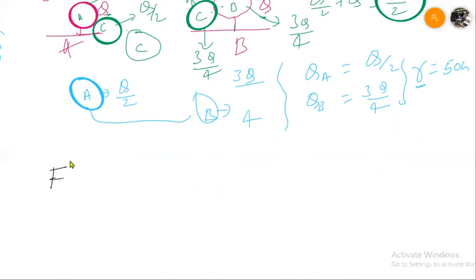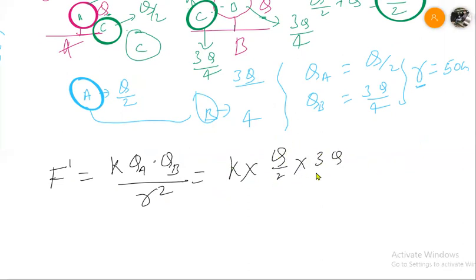Force new force, that is force dash, is equal to K QA into QB divided upon R AB squared. So this is the same distance, so you can write it as R squared. So K into QA the place we can write Q by 2, and QB the place we can write 3Q by 4, divided by R squared.